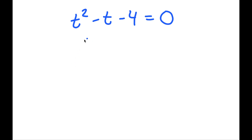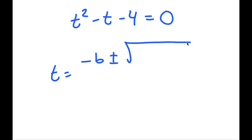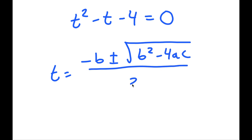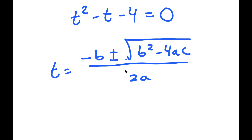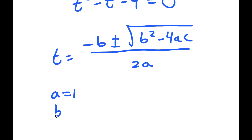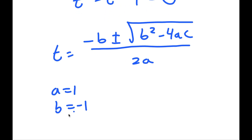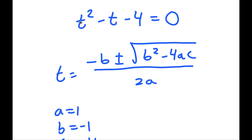Now, to solve this, what we have here is a quadratic equation. So to solve it, I can use the quadratic formula, which as a refresher is negative b plus or minus the square root of b squared minus 4ac, all over 2a. And a in this case is 1, b is negative 1, and c is negative 4.